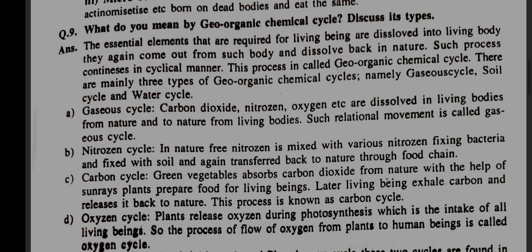A. Gaseous cycle: carbon dioxide, nitrogen, oxygen, etc., dissolve in living bodies from nature and return to nature from living bodies. Such relational movement is called a gaseous cycle. Nitrogen cycle: in nature, free nitrogen is mixed with various nitrogen-fixing bacteria and fixed with soil, and again transferred back to nature through the food chain.